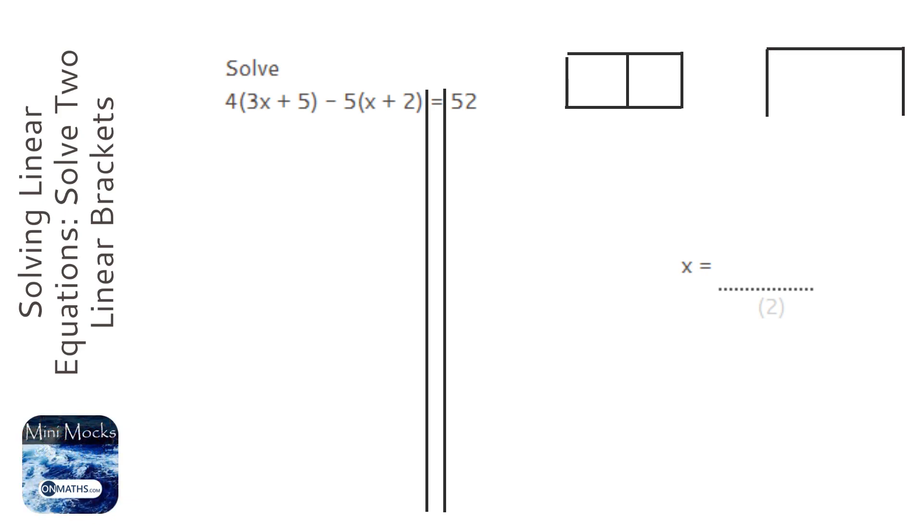So first bracket is 4 times 3x plus 5. So 4 times 3 is 12, and 3x would make the 12x. 4 times 5 is 20, so plus 20. And the second bracket, well it's minus